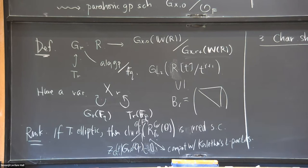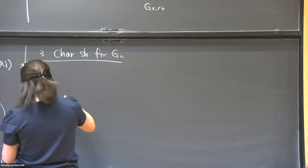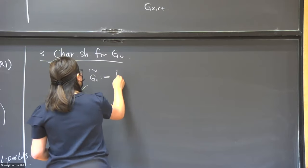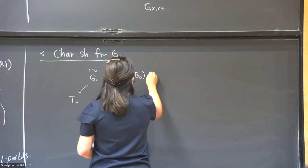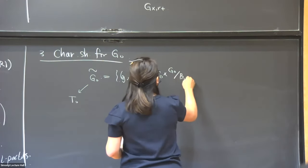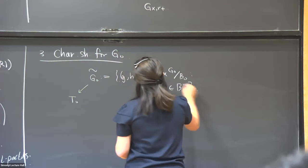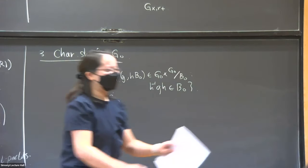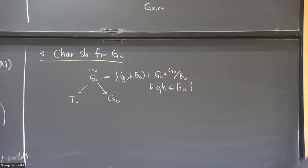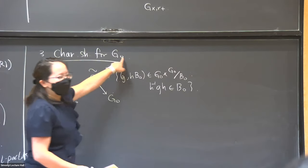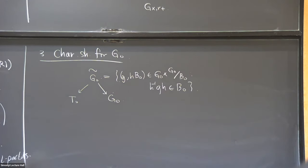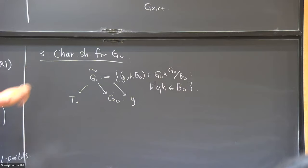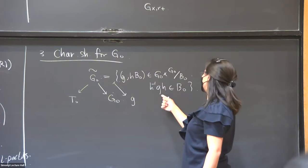This theory is due to Lusztig, and the beginnings of it started with what we call the Grothendieck-Springer resolution. This map is given by projection to the first coordinate, and this map sends (h, B_0) to T_0 by h^{-1}gh ∈ B_0. My understanding is that this was first introduced by Springer in the Lie algebra case, where the analog of the upper space is a resolution of the nilpotent cone.